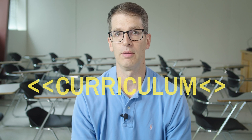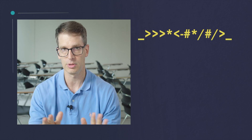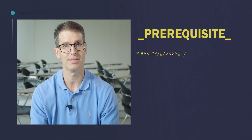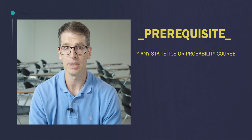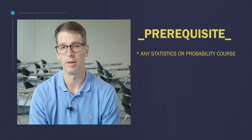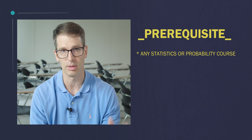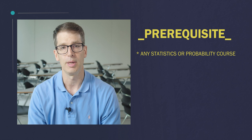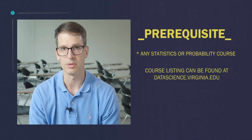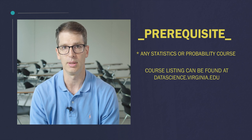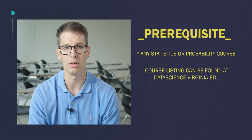The curriculum is a manifestation of the definition of data science that we've worked to establish in the School of Data Science. It has five categories. Starting with the prerequisites — they're pretty simple. It's basically any statistics or probability course that we offer here at UVA. Many students come in with credit for that from AP courses as well. So it's very broad, there are many pathways, and we have a list of those classes on the website.